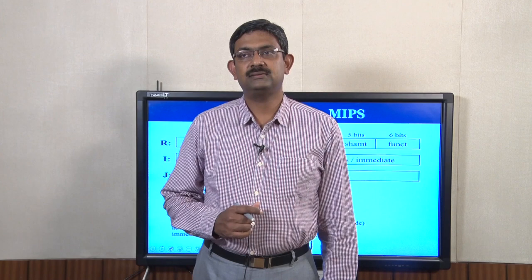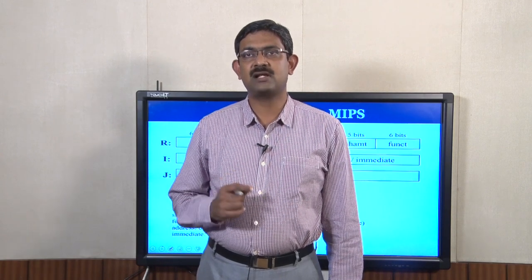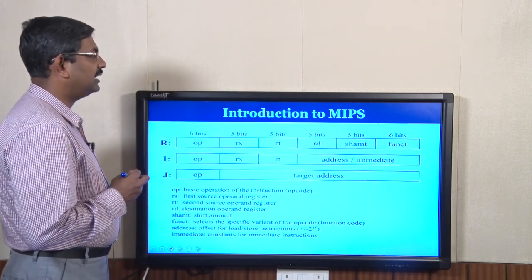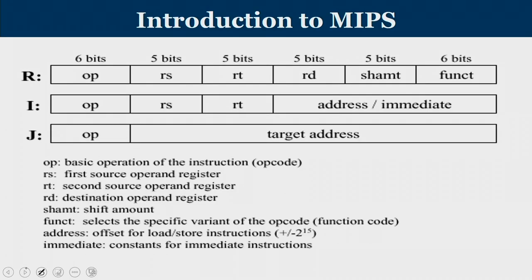Every instruction in MIPS is represented in 32 bits. MIPS has basically 3 types of instructions: R-type, I-type, and J-type. The R-type instruction is also known as register-type instruction, where the first 6 bits of the 32-bit instruction represent the opcode, followed by source operands RS and RT, destination operand RD, function code, and shift amount.